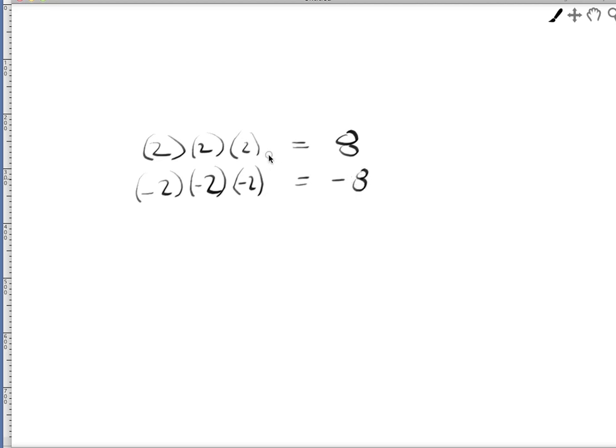There is no ambiguity here. Positive 2 cubed gives you 8, negative 2 cubed gives you negative 8. That means the cube root of 8, no ambiguity, it has to be 2. And the cube root of negative 8, no ambiguity, it has to be negative 2. So even roots and odd roots are different.